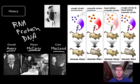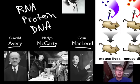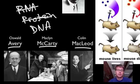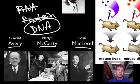They added a ribonuclease and broke down the RNA — it was still able to transform. They added trypsin and chymotrypsin to break down proteins — it was still able to transform. And then they added a deoxyribonuclease, which breaks down DNA, and then they couldn't transform.